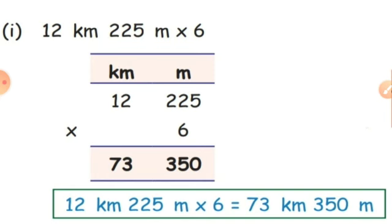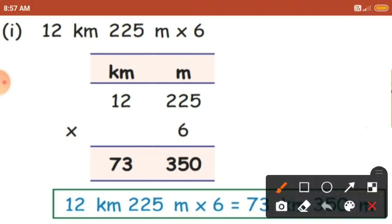Next, write the numbers accordingly. In the kilometers place, which number is there? 12, because they gave you 12 kilometer. So in the kilometers place, 12 will come. Next, in the meters place, 225 will come, because they gave you 225 meter.